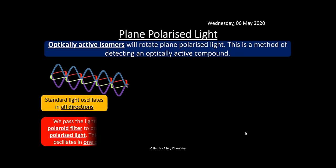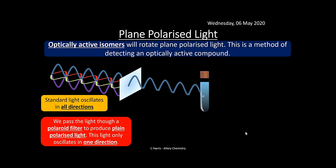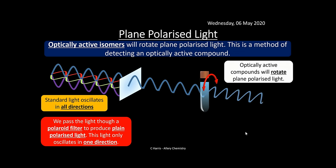If something is optically active — that is, it has a chiral center — we can detect it because it will rotate plane-polarized light. Standard light oscillates in all directions. If we pass it through a polaroid filter, we produce plane-polarized light with a single oscillating wave. An optically active compound placed in the light path will rotate that plane-polarized light in a particular direction.